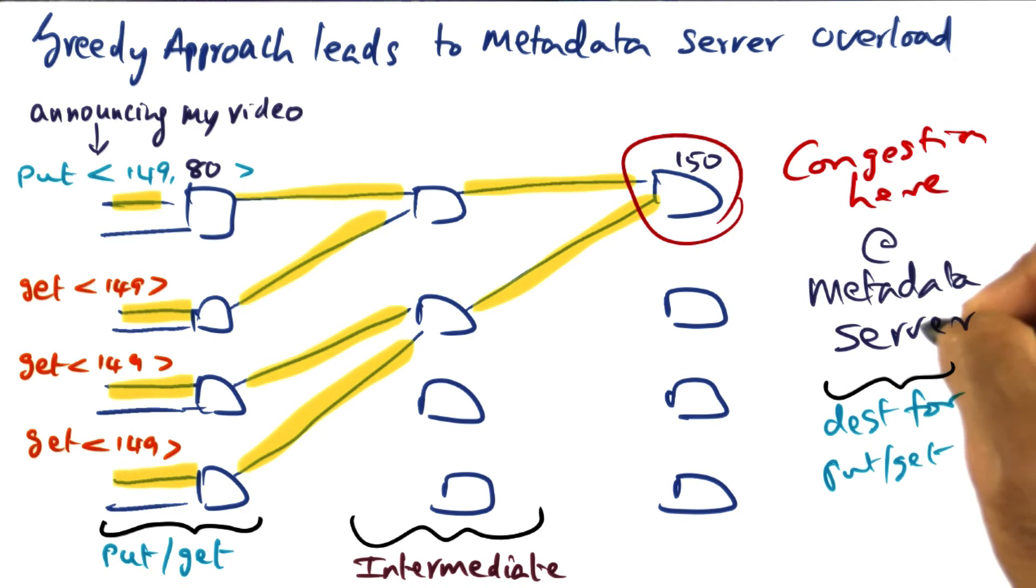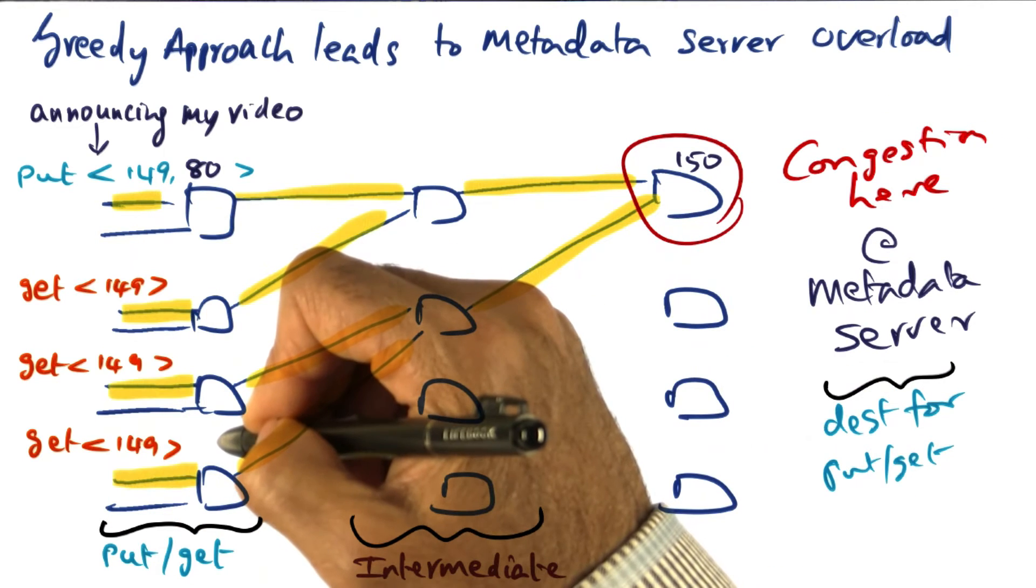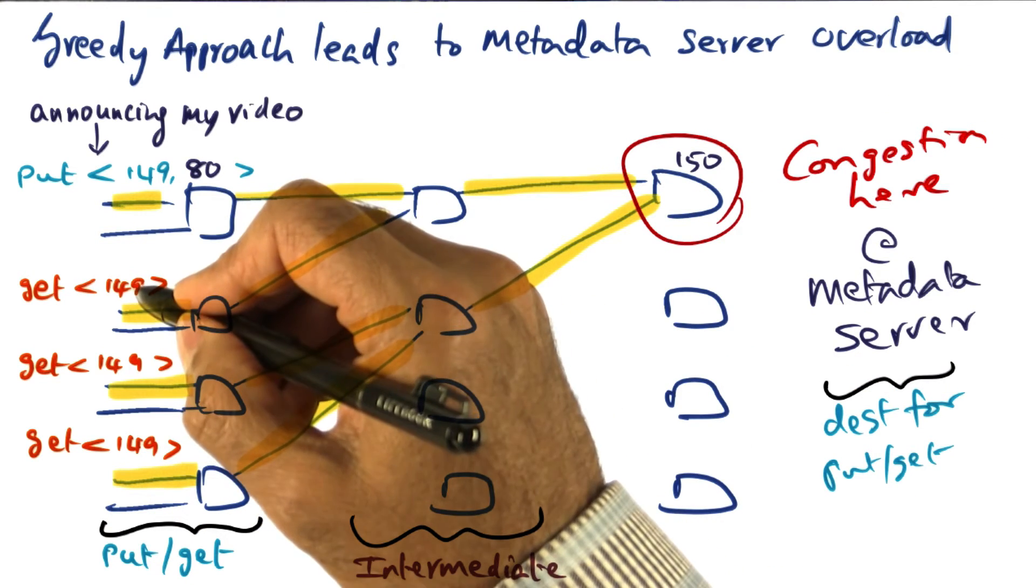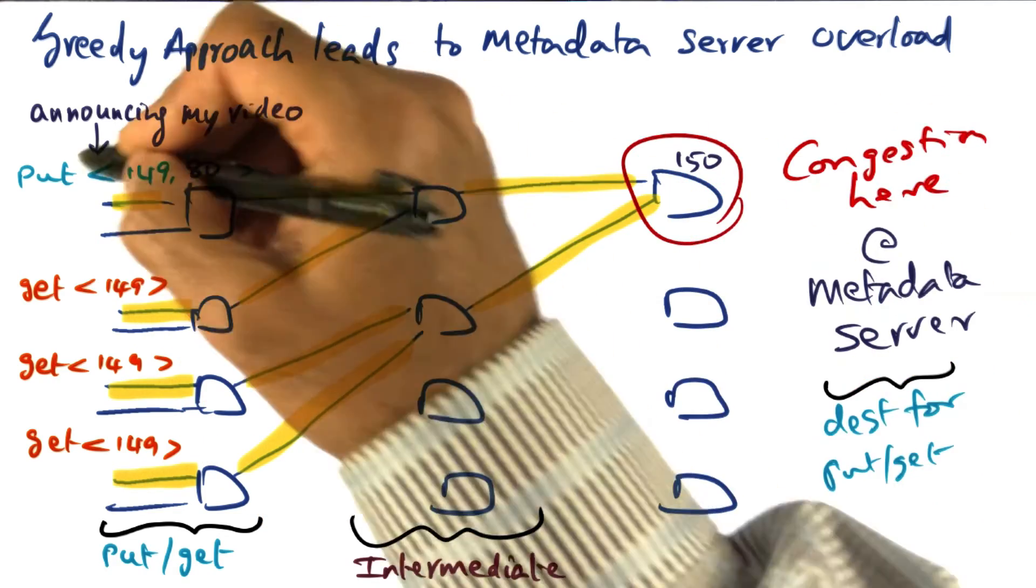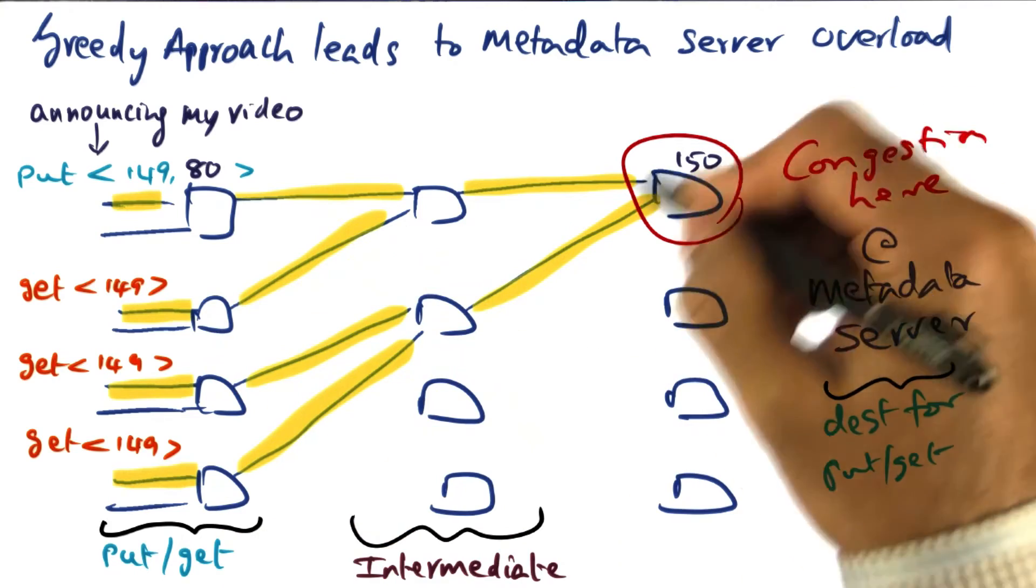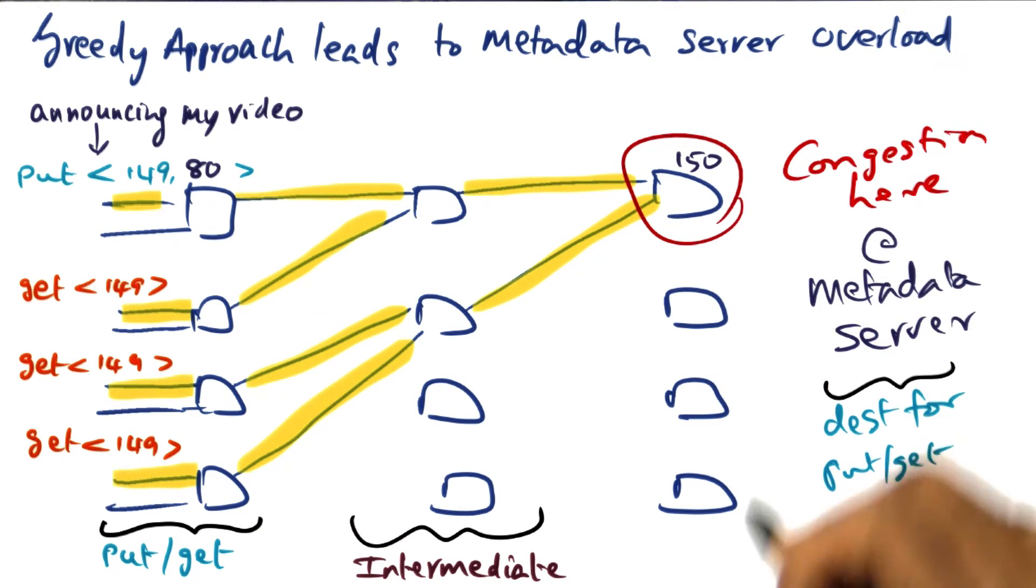Again, there is congestion at the metadata server. It can happen because some content is so popular that everybody that wants to discover the content provider, they have only the key, and they have to go to the metadata server to find out the content provider. So that results in this congestion, which is the metadata server overload problem.